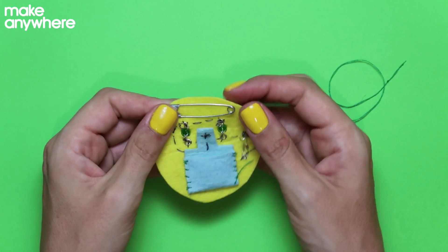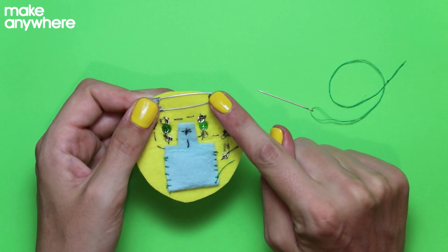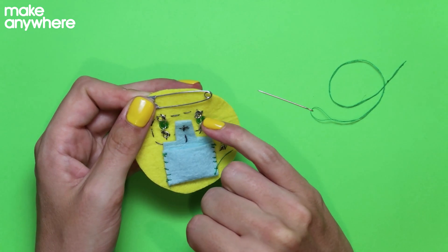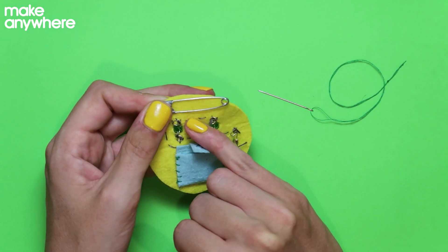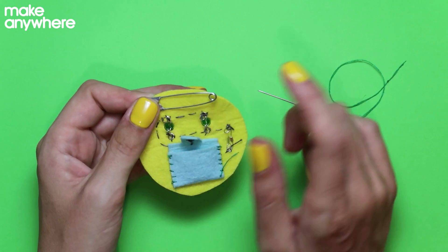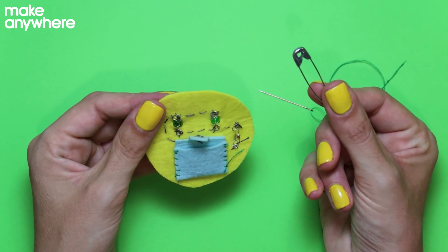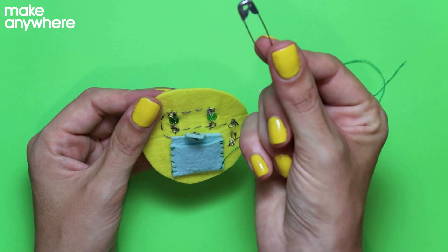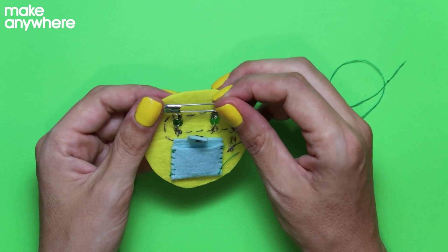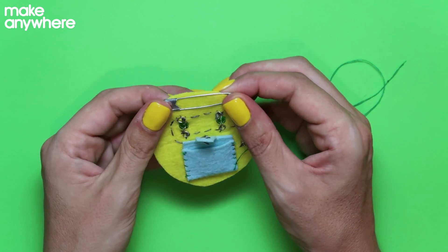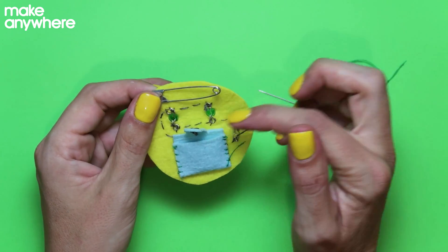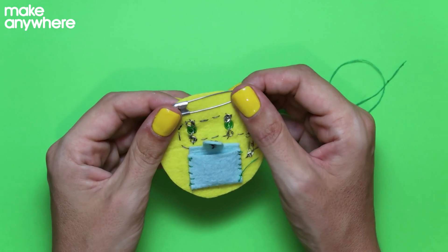One thing you want to watch out for is to make sure that your safety pin doesn't touch the legs of the LED or your conductive thread. Safety pins are made of metal, metal is conductive, so the electricity will run through your safety pin. And it might cause a short circuit, or it might cause your LEDs to not work, or your battery to run dead.